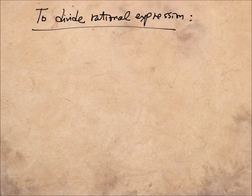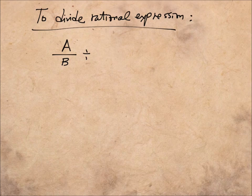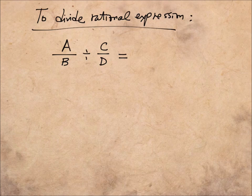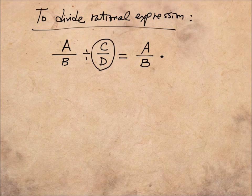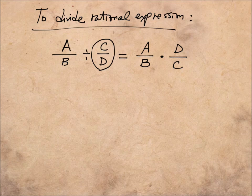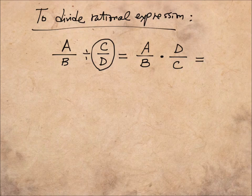To divide rational expressions, we follow this rule: if we have a over b divided by c over d, we turn it into a multiplication problem by multiplying by the reciprocal of the second expression. The first expression stays the same, and we invert c over d to get d over c. So a over b divided by c over d equals a times d on top and b times c on the bottom.